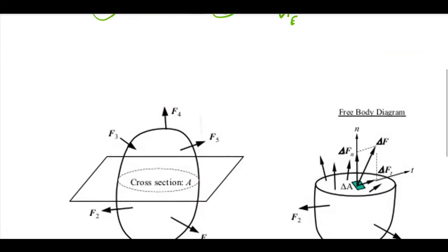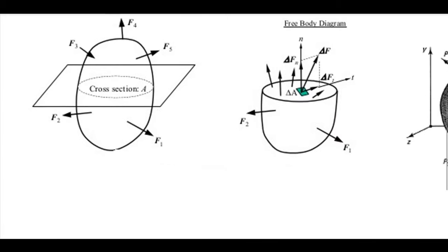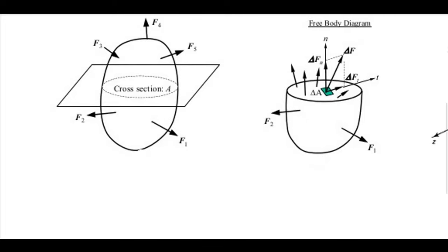Now I will go into a bit more detail. Let's assume a body in equilibrium — any random body acted upon by a set of forces F1, F2, F3, F4, and F5. Since it is in equilibrium, the total force equals zero and there is no acceleration. Let's assume a cross-section, a section plane, and this cross-section has area A.